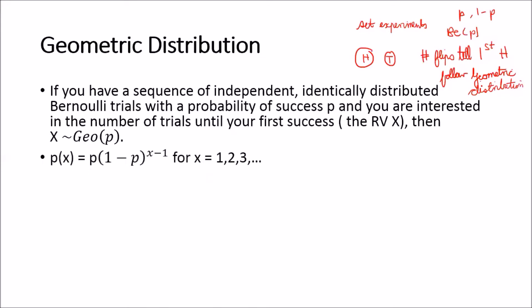The probability mass function for the geometric distribution is p times (1 minus p) to the power x minus 1 and it's valid for the support of x equal to 1, 2, 3, up to infinity.